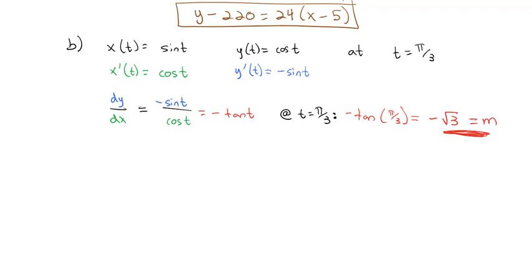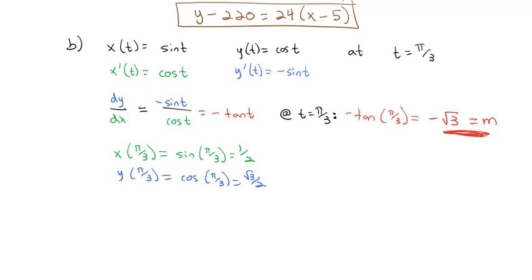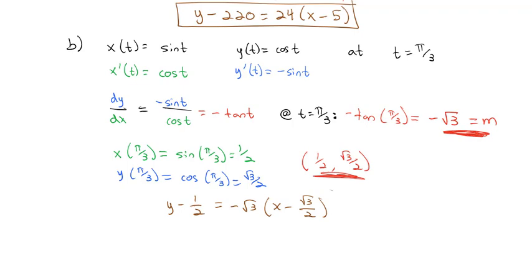Now we just need our point. Plugging π/3 into the x equation: x = sin(π/3) = √3/2. Wait — sin(π/3) = √3/2, and cos(π/3) = 1/2. So x = √3/2 and y = cos(π/3) = 1/2, giving us the point (√3/2, 1/2). With slope -√3, our tangent line is y - 1/2 = -√3(x - √3/2). And we've found the equation of our tangent line.